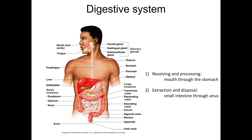The digestive system consists of the digestive tract — the oral cavity, esophagus, stomach, small and large intestines, and anus. It also includes accessory glands such as the salivary glands, liver, pancreas, and gallbladder. This video will focus on part of the upper digestive system: the oral cavity and the accessory salivary glands. Together, these components perform the function of receiving and initial processing of food.